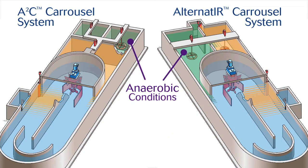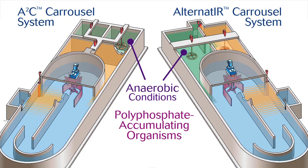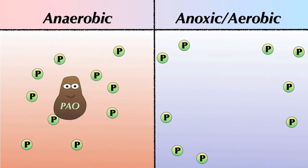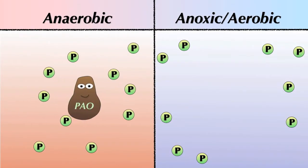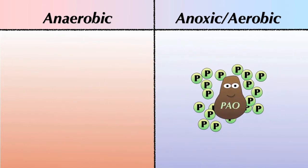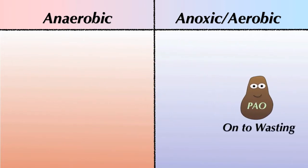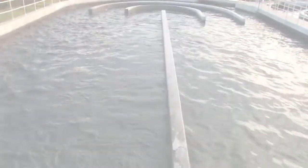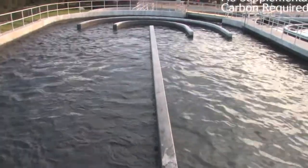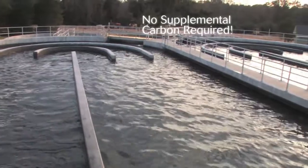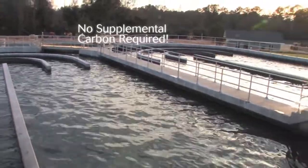By including an anaerobic zone, polyphosphate accumulating organisms, or PAOs, are allowed to thrive. When properly cultivated in the carousel system, these specialists are capable of reducing phosphorus concentrations in the effluent. An optimized BNR carousel process will typically perform all of these functions without the need for supplemental carbon addition.